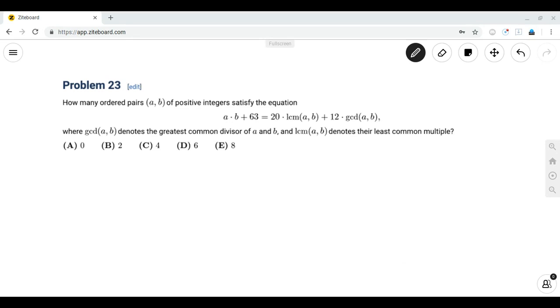So since we only have one equation in this problem, and we have essentially three different types of expressions, a times b, LCM of a and b, and GCD of a and b, we want to somehow relate them together.